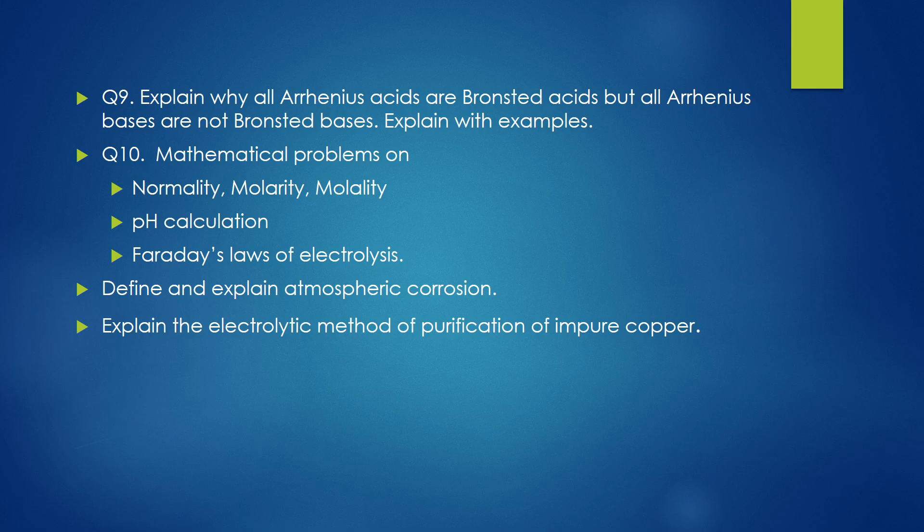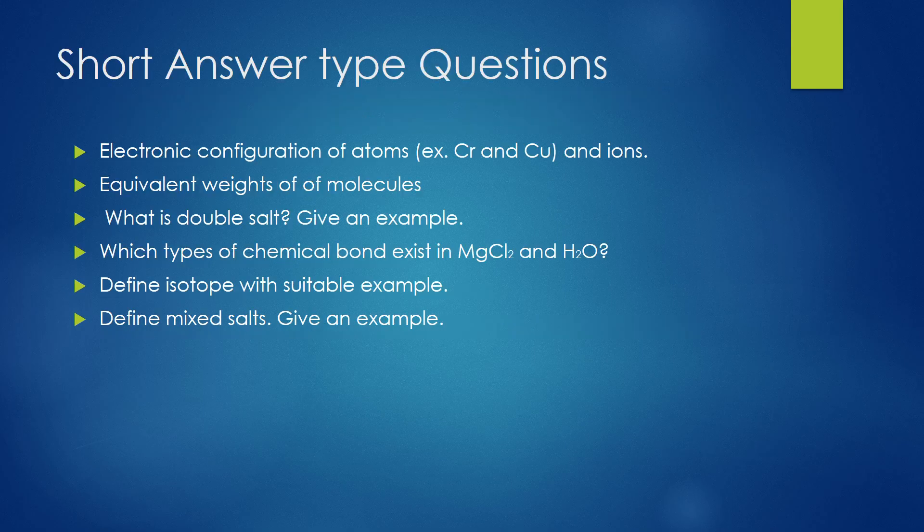Next, define and explain atmospheric corrosion. There are two types of corrosion, so it may ask the mechanism of atmospheric or waterline corrosion. Next, explain the electrolytic method of purification of impure copper, that is nothing but the electro refining process.